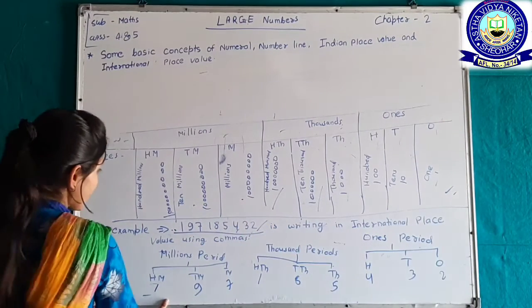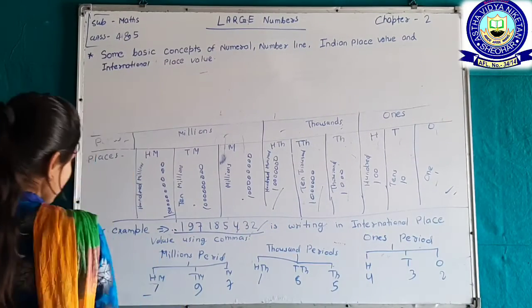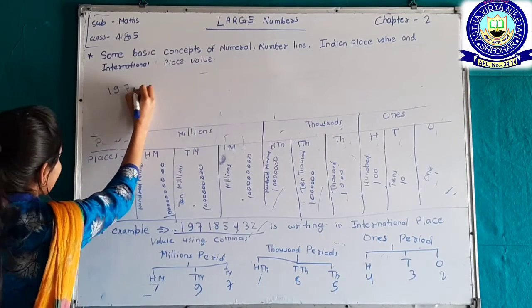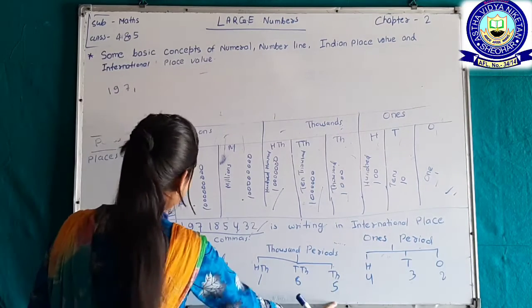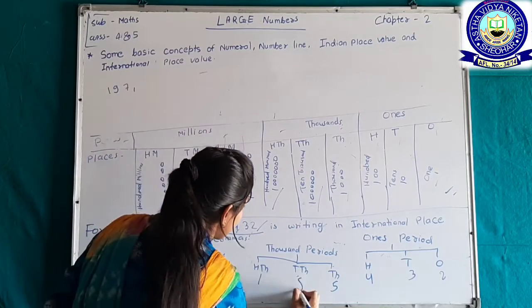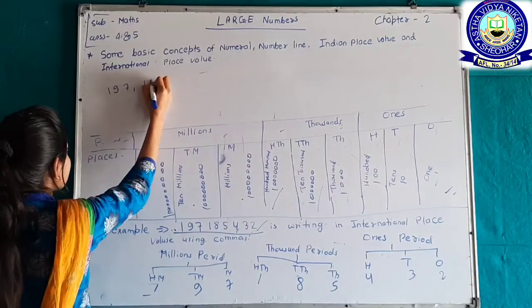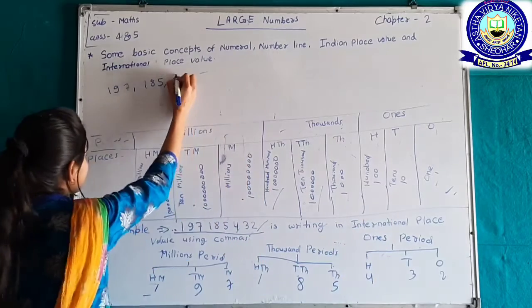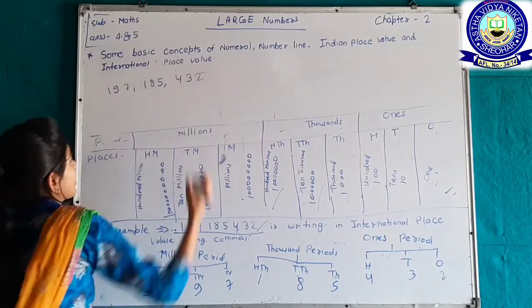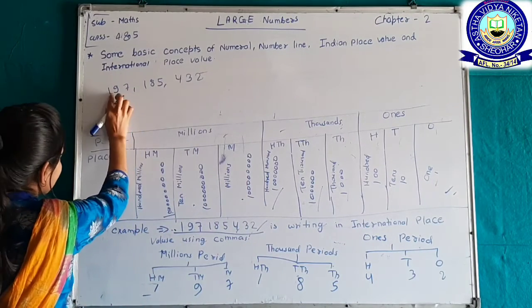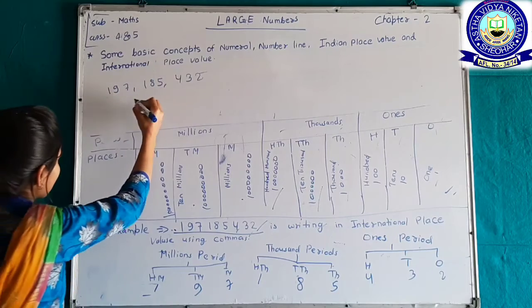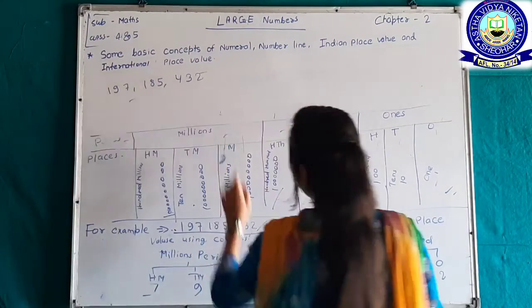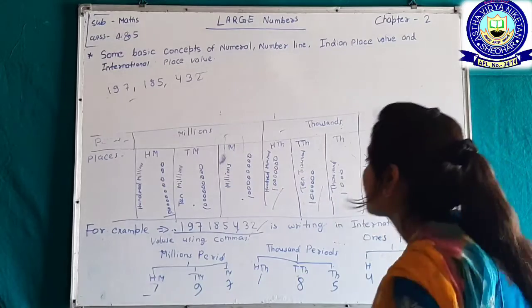For example, placing the digits: 2 for ones, 3 for tens, 4 for hundreds, 5 for thousands, 8 for ten thousands, 1 for hundred thousands, 7 for millions, 9 for ten millions, 1 for hundred millions. Using commas we write it as 197,185,432. In numeration: one hundred ninety-seven million, one hundred eighty-five thousand, four hundred thirty-two.